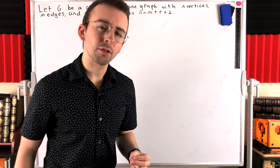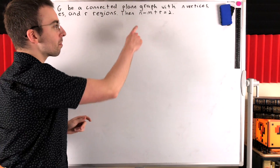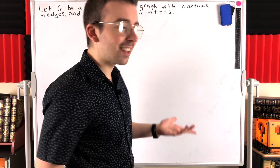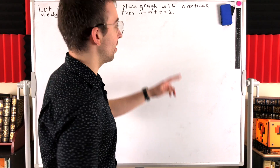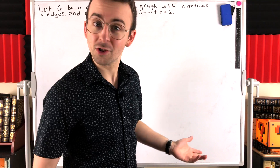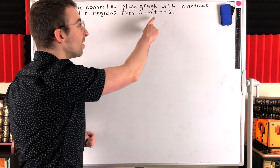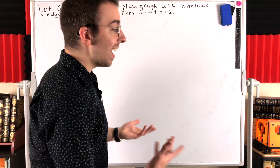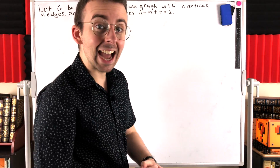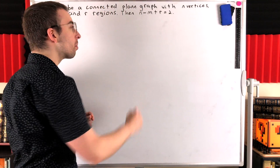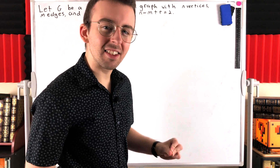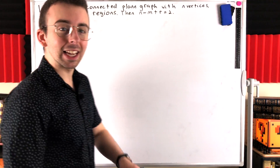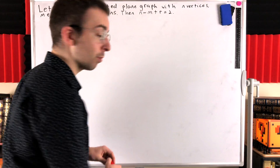Notice one of the things this result tells us. The number of vertices and the number of edges never changes in a graph — no matter how you draw it, it's got the same number of vertices and edges. Two also doesn't change; two is two. So this tells us that no matter how we draw a planar graph in the plane, as long as it's a plane drawing with no edge crossings, the number of regions will always be the same.